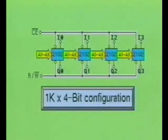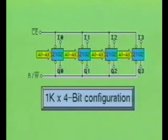By simply paralleling the memory ICs, you can create a 4-bit or higher output memory device. By connecting the address and control lines in parallel, the same address on all ICs will be selected simultaneously.